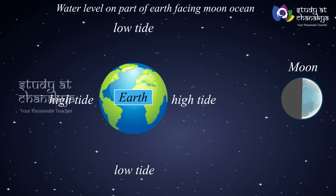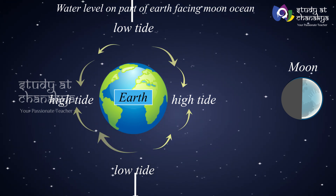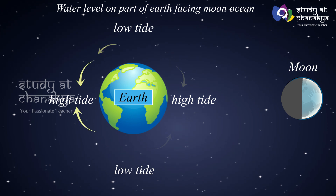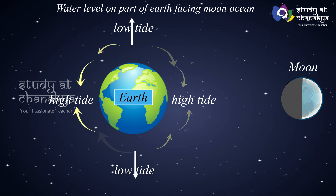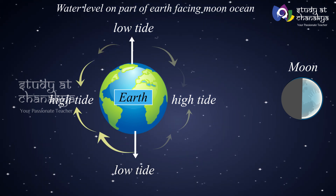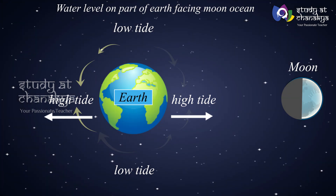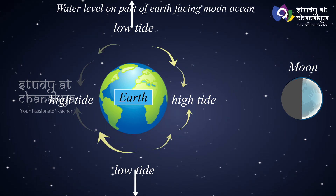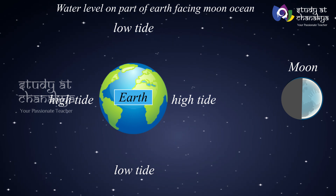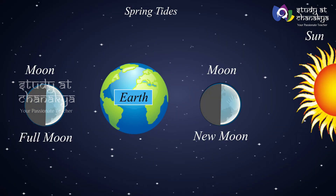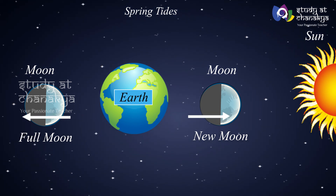The water level on the part of the earth facing the moon rises. The rise in water level due to the gravitational pull exerted by the moon leads to high tide. The centrifugal force due to the earth's rotation also causes a rise in water level. At places located 90 degrees away from the tidal regions, water level goes down — this phenomenon is known as low tide.